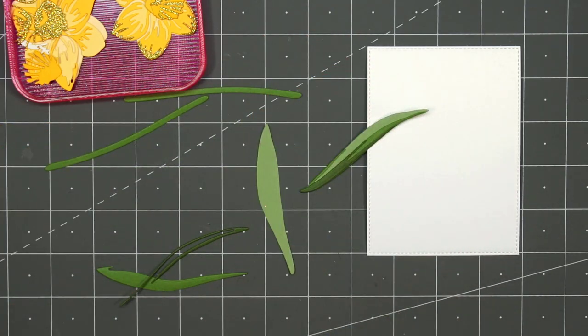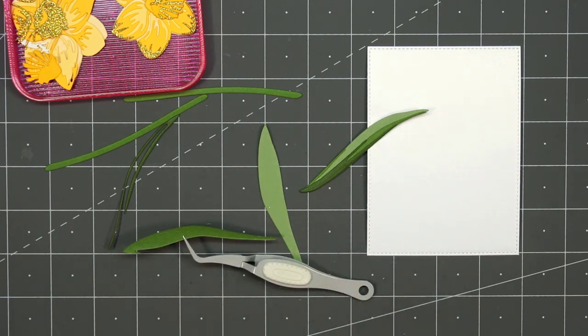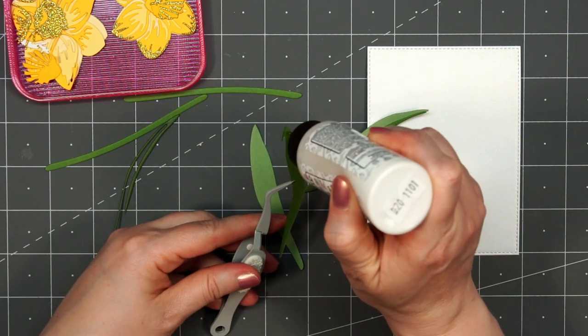Here are all the flowers, the leaves, and the stems. I've already assembled one of the flowers and one of the leaves just to save on time, but I will assemble one here with you.